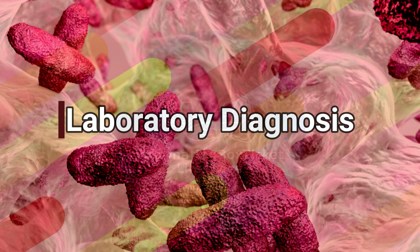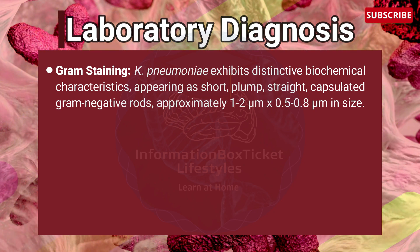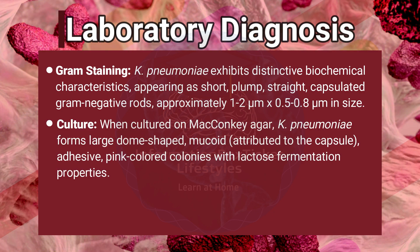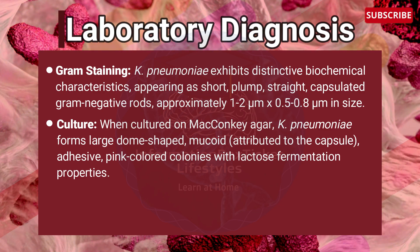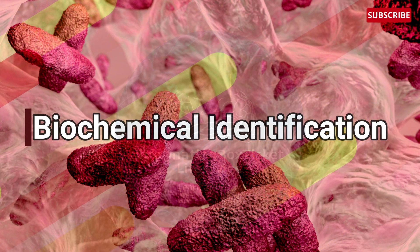For laboratory diagnosis, Gram staining reveals Klebsiella pneumonia as short, plump, straight, capsulated gram-negative rods approximately 1.2 micrometers by 0.5 to 0.8 micrometers in size. When cultured on MacConkey agar, Klebsiella pneumonia forms large, dome-shaped, mucoid, adhesive pink-colored colonies with lactose fermentation properties, attributed to the capsule.